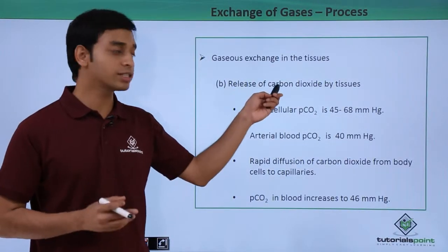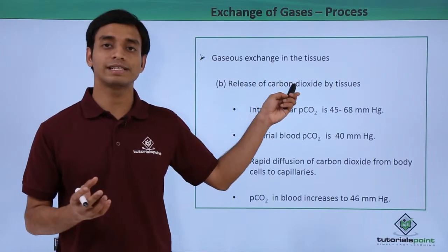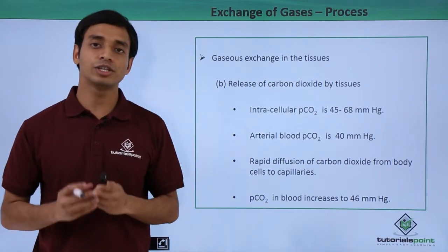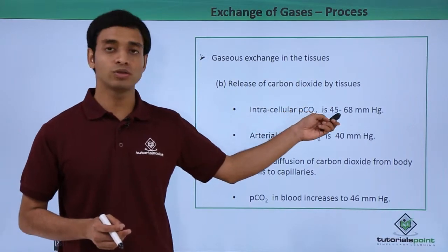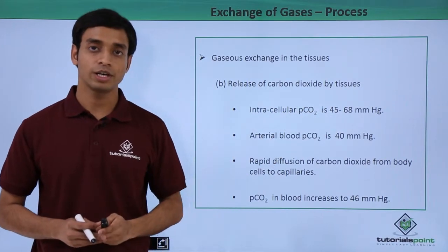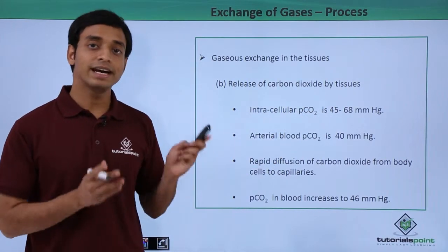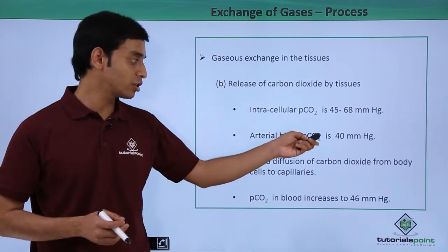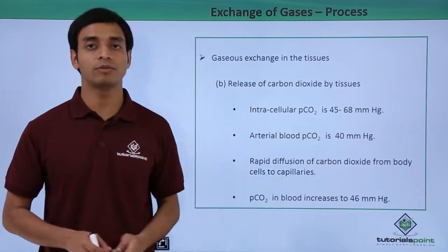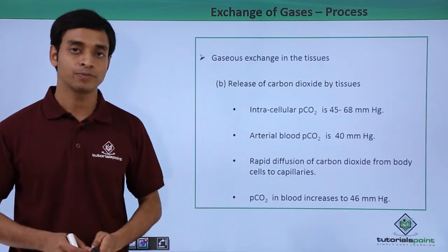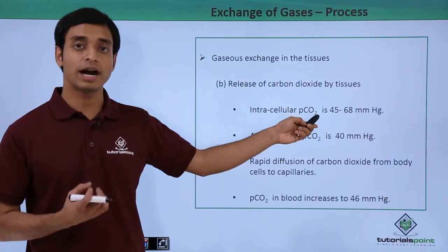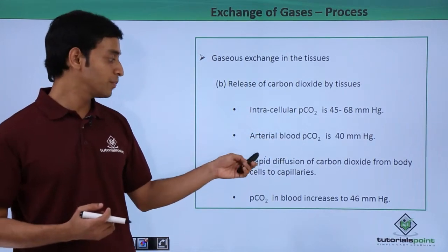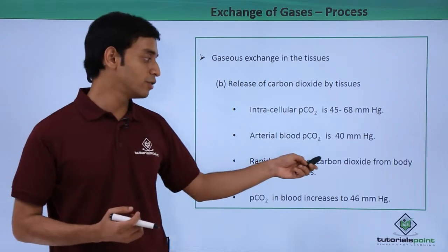Now let us discuss carbon dioxide exchange in the tissues. The partial pressure of carbon dioxide in the tissues is about 45 to 68 mmHg, whereas in the arterial blood oxygenated from the alveoli the partial pressure of carbon dioxide is about 40 mmHg. Because of this significant difference, there is rapid diffusion of carbon dioxide from the body tissues into the capillaries.